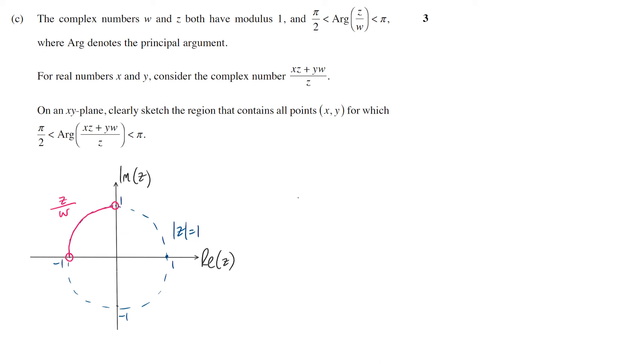In fact, the position of Z over W as a complex number is going to be more important than the actual position of Z or W individually. And we'll see why in a minute, because when we take this expression, XZ plus YW over Z, and simplify by dividing that first term through by Z, we'll get X plus Y times W over Z. Now W over Z is of course the reciprocal of Z over W.